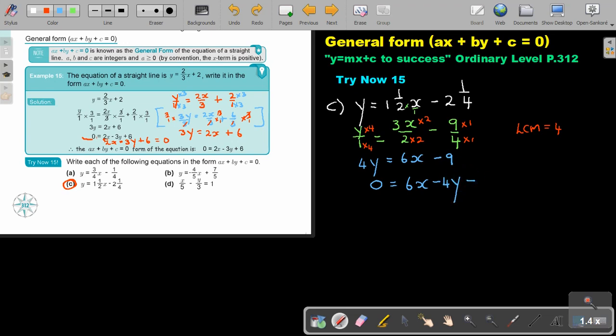And now if you really want to have it on this side, it's almost like we did it in changing subject of the formula. We just swapped the sides. So therefore, if you really want it in that side, you can say it's going to be 6x minus 4y minus 9 equals 0. And that is your final answer. Thank you.